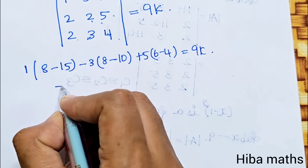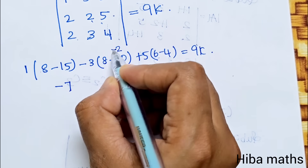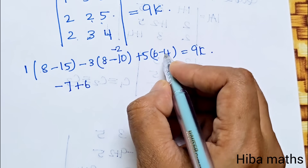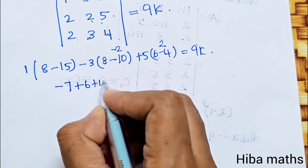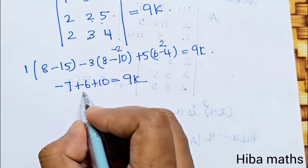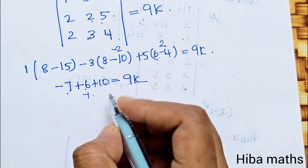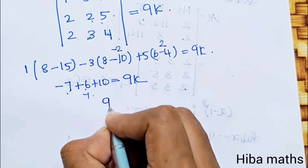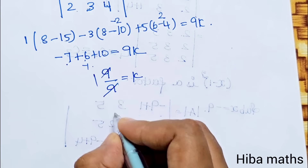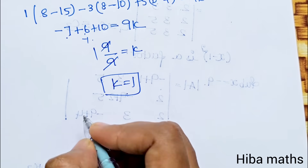Computing: 1×(8-15) - 3×(8-10) + 5×(6-4) = 1×(-7) - 3×(-2) + 5×(2) = -7 + 6 + 10 = 9. So 9 = 9k, therefore k = 1.